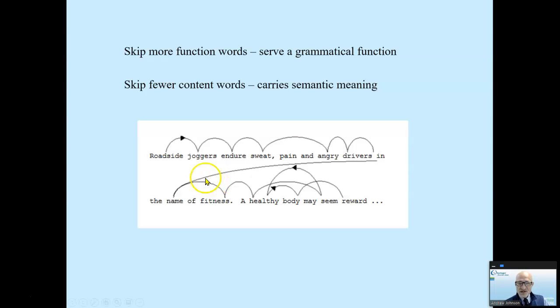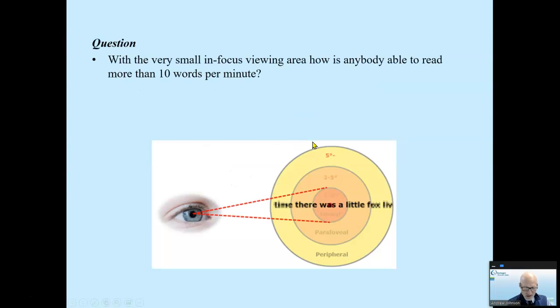When we read, our eyeballs fixate on only 60% of the words. This means we skip right over 40% of the words. So clearly, what's in our head is directly in our eyeballs as we read. We skip more function words, that's like and, the, in, they serve a grammatical function. We skip fewer content words, information words. So the question is this, with the very small in-focus viewing area, how are our brains able to read more than 10 words per minute? How is that possible?